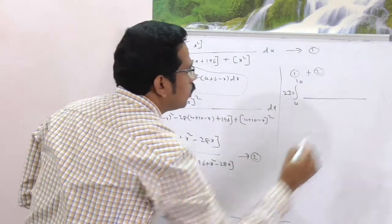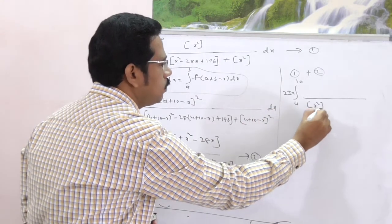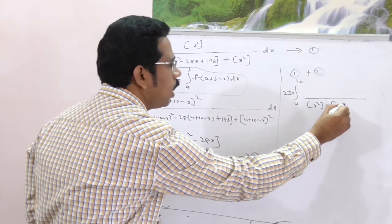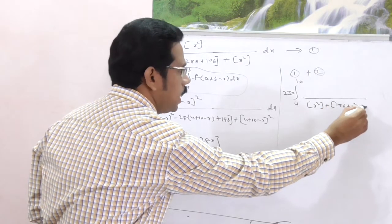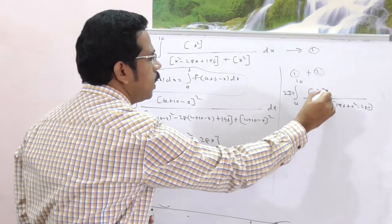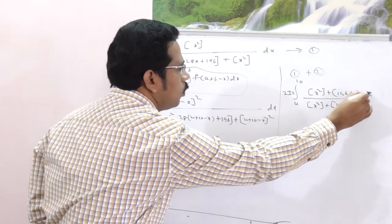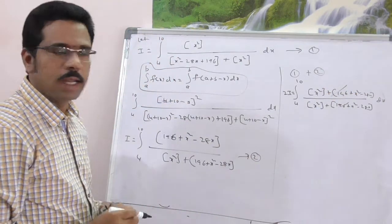While adding 1 plus 2, your denominator should be √(x square) plus √(196 plus x square minus 28x). Numerator is also same. This two gets cancelled clearly.